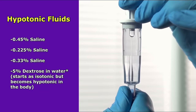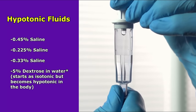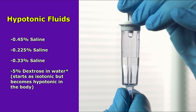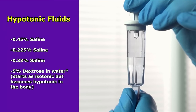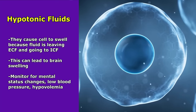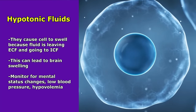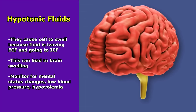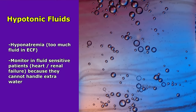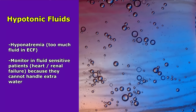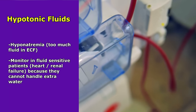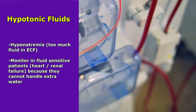Some hypotonic solutions include half normal saline, 0.225% saline, 0.33% saline, and 5% dextrose in water — though that last one starts out isotonic and becomes hypotonic once in the body. As a nurse, remember that hypotonic solutions cause the cell to swell because fluid leaves the extracellular space and enters the intracellular space, which could cause brain swelling. Monitor for mental status changes, low blood pressure, and hypovolemia. Because we're giving free water, we could water down the sodium level, so monitor for hyponatremia. Also be cautious with fluid-sensitive patients, especially those with heart failure and renal failure.